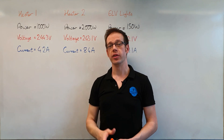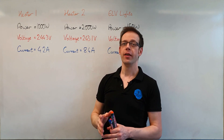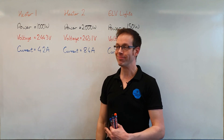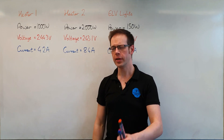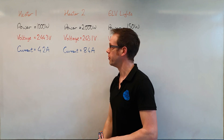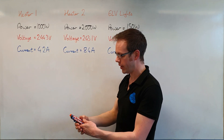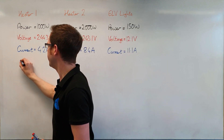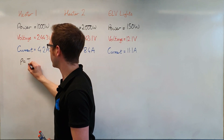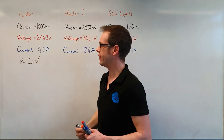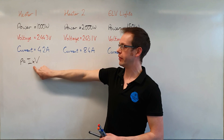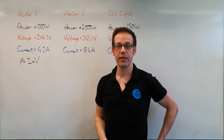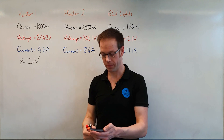That leads us to the first of three power formulae. So we're going to formalise that relationship: the power in the circuit P is equal to I, the current, multiplied by V, the voltage. That is our power formula — what I often refer to as the basic power formula. If you take the current and multiply it by the voltage, you will get the power. Let's see if that's accurate with the more precise numbers we measured from the workshop.